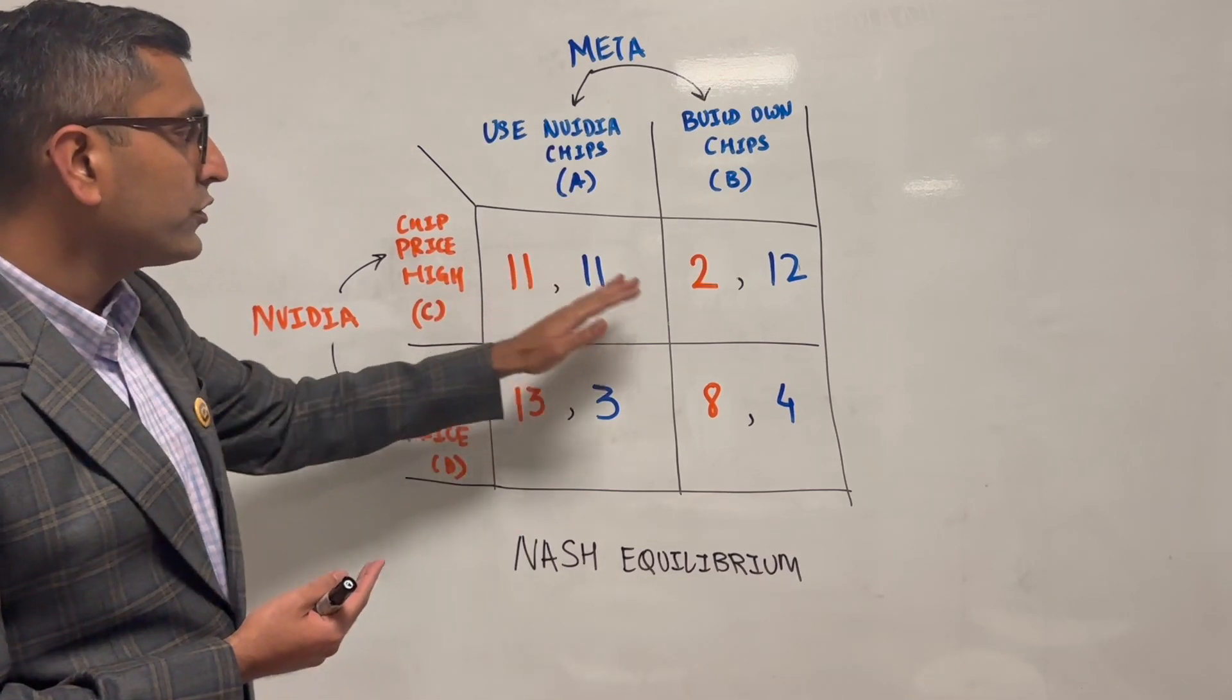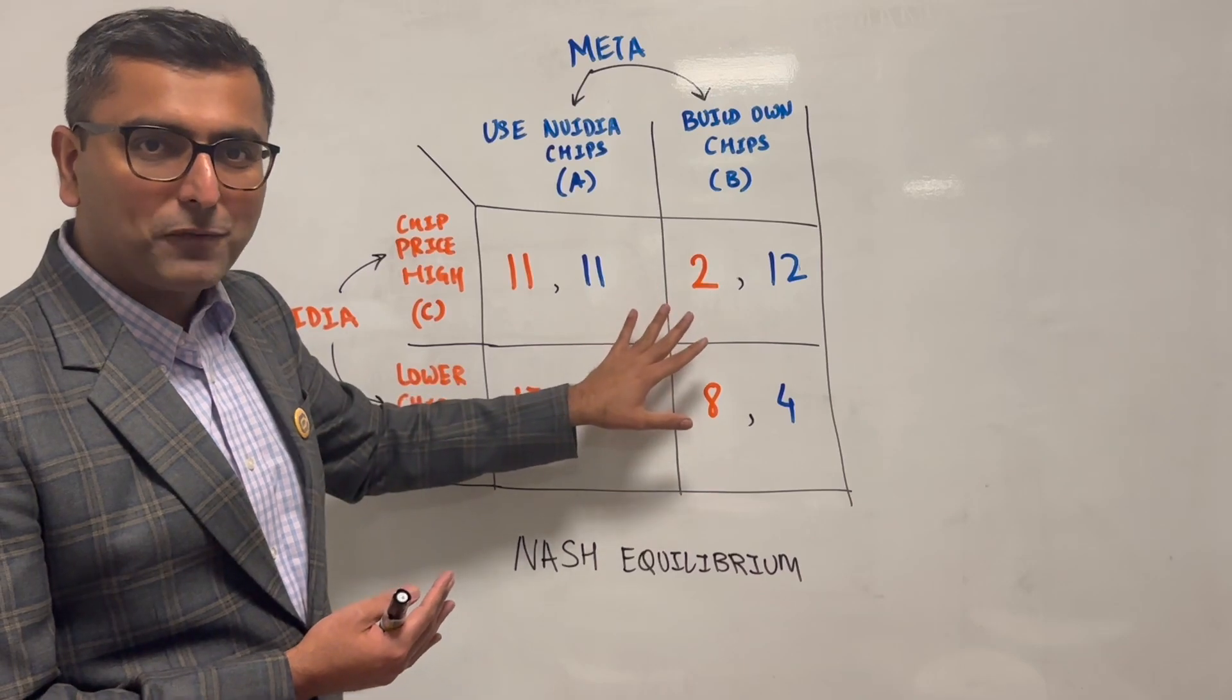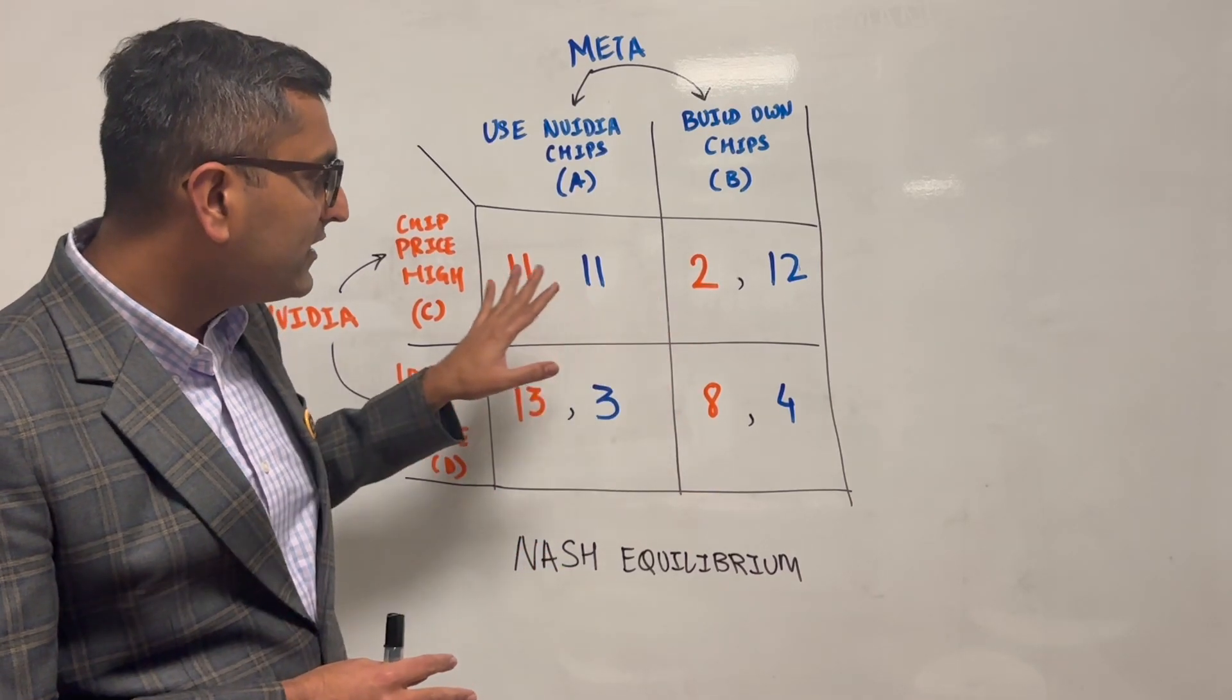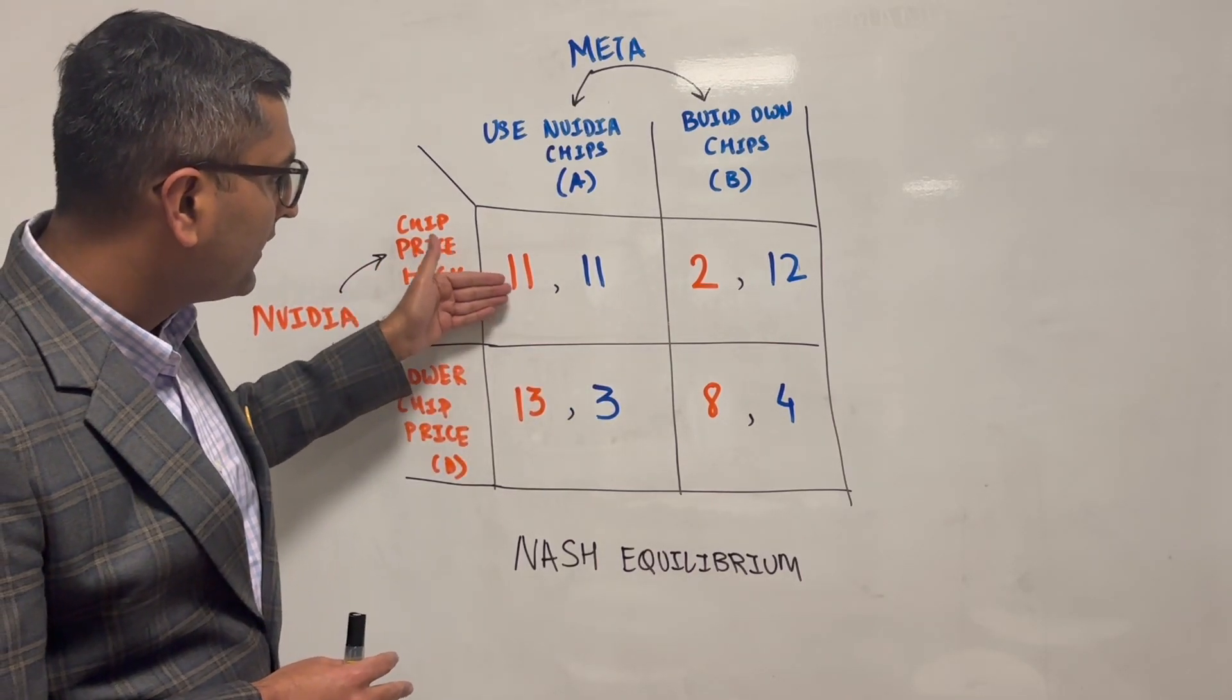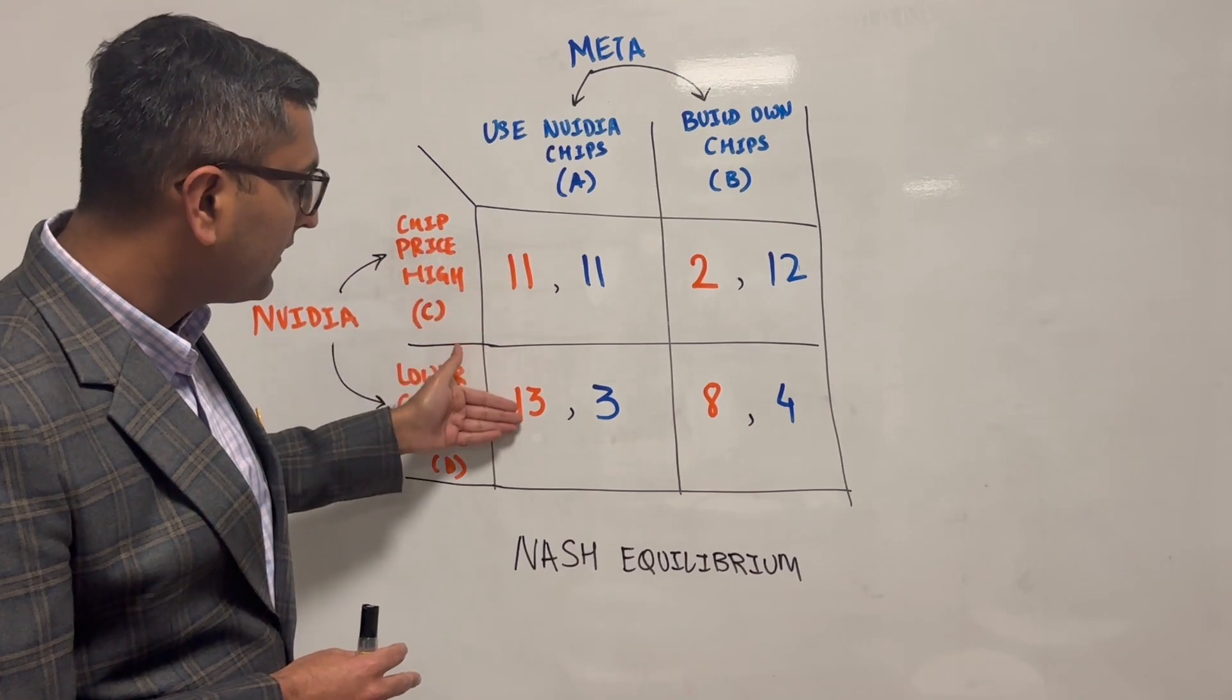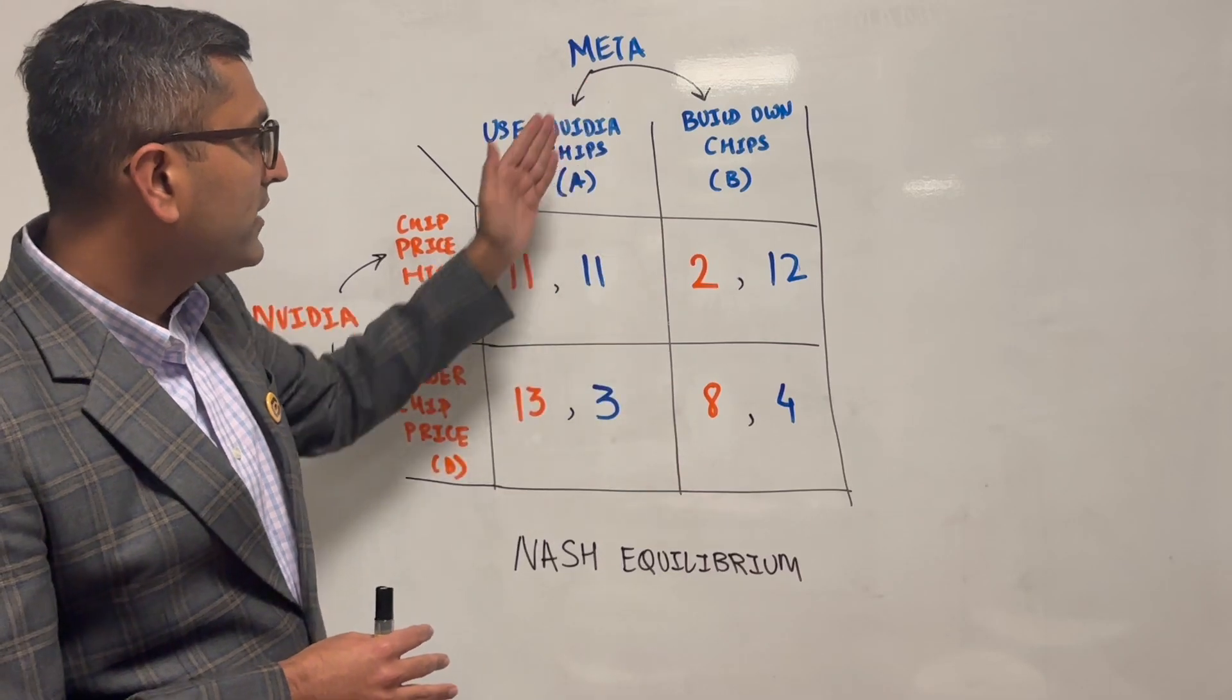Let's look through this. How would we solve given these payoffs? This assumes that you have these payoffs and these payoffs could be completely wrong, but assume that this is the work that Nvidia's engineers and leadership decided, that this is the benefit they would get for each of these four choices, and likewise Meta did the same.